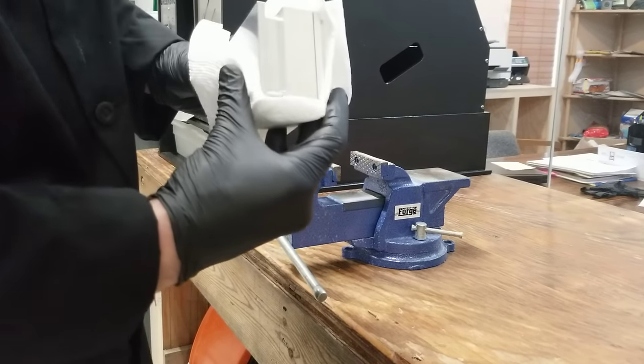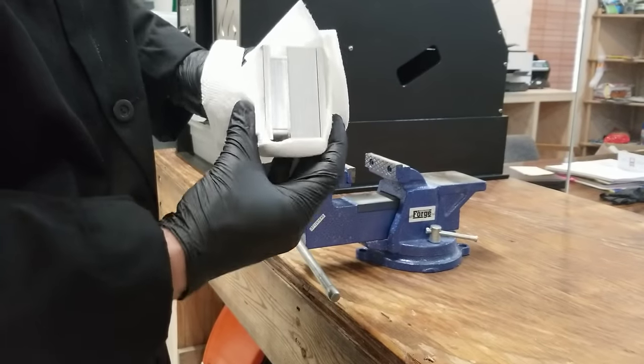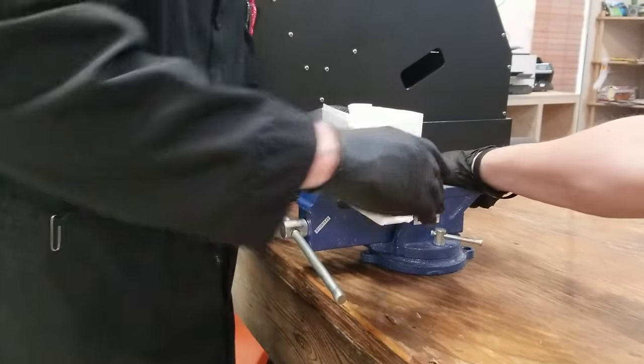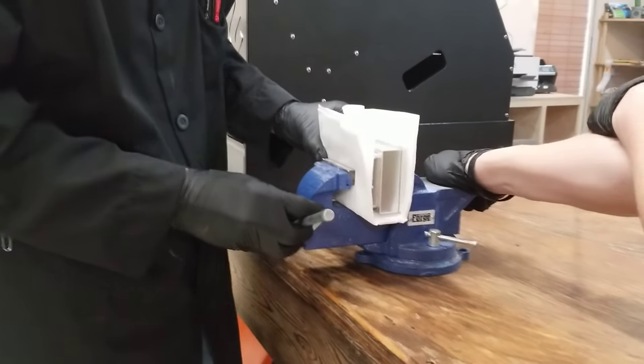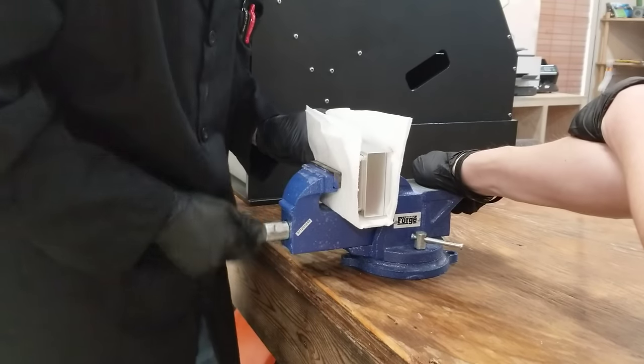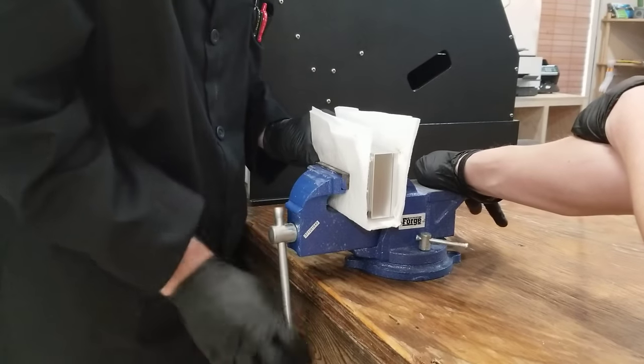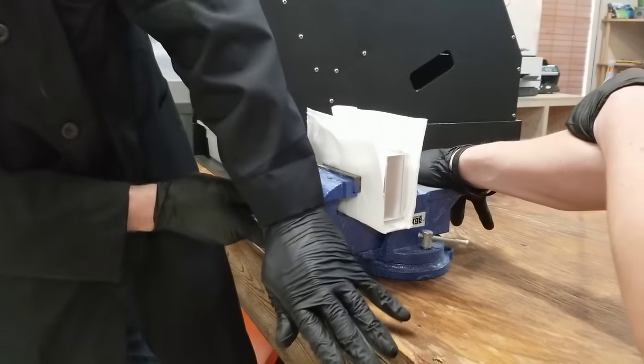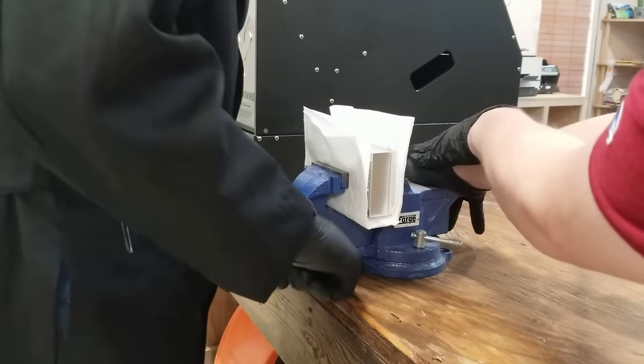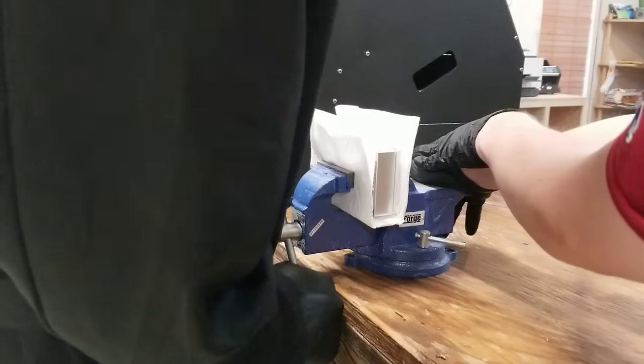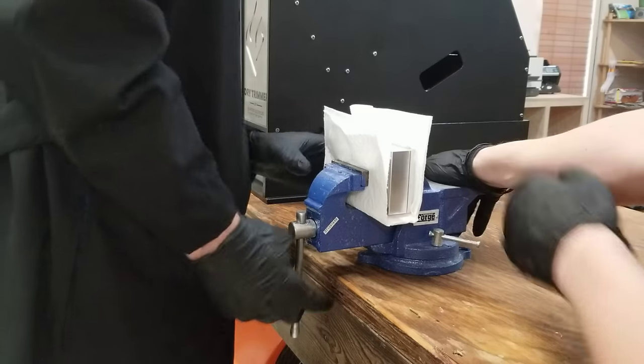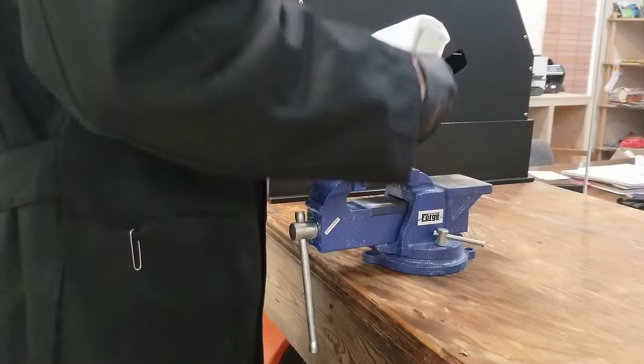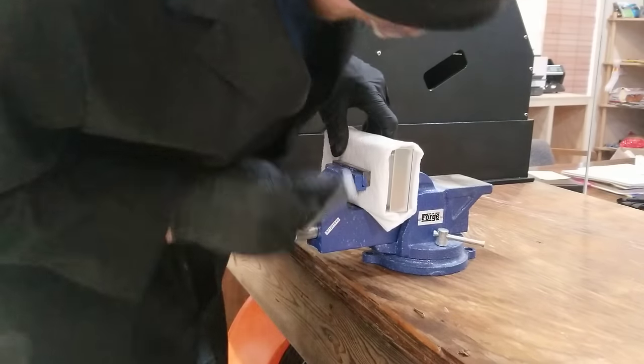Alright, so we're starting with our brick this thick. And we are going to squeeze it down until it is about half as thick. Squeeze it hand tight in the vise at room temp. Flip it over just so that it is as even as we can make it.